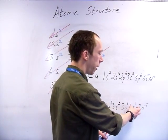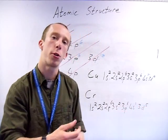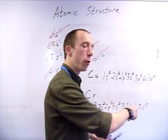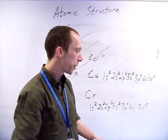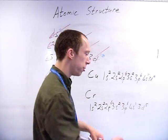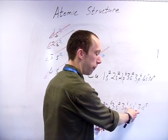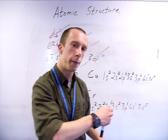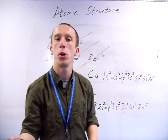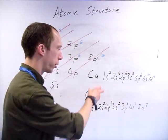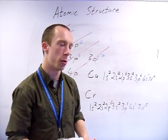And have 4s1 3d5. If you've got any more electrons, so when you go on to ones past chromium, you'd fill up the 4s and then you would start filling up the 3d as per normal. But the copper and the chromium are the odd ones.